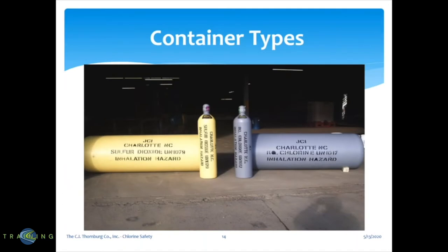Container types. There's chlorine and sulfur dioxide — chlorine cylinders are gray in color. You have a 150-pound cylinder and also a one-ton cylinder. Our supplier is Jones Chemical Incorporated, and we get ours from their Barberton, Ohio location. The ton container DOT spec number is DOT 106A500. It's about 82 inches in length and 30 inches in diameter, weighing between 1,100 and 1,600 pounds empty.